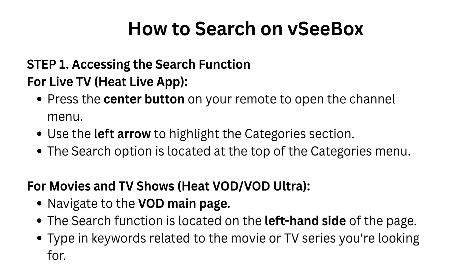How to Search on VC Box. Step 1: Accessing the Search Function for Live TV. In the Heat Live app, press the center button on your remote to open the channel menu. Use the left arrow to highlight the Categories section. The search option is located at the top of the Categories menu.